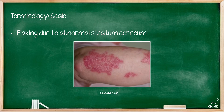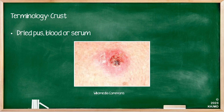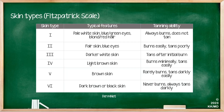A scale is flaking of skin due to abnormal stratum corneum. A crust is dried pus, blood, or serum. Last but not least, it's important to talk about skin types based on the Fitzpatrick scale. This is sometimes used to describe patients and it's not too uncommon to appear on your MCQs. The Fitzpatrick scale contains six different skin types, starting from one to six, ranging from pale to dark brown or black skin.